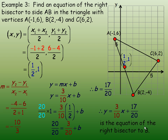That's the equation of the right bisector to AB. The right bisector is perpendicular to AB — there's the perpendicular symbol — and it goes through the middle of line segment AB. That's the end of the example.